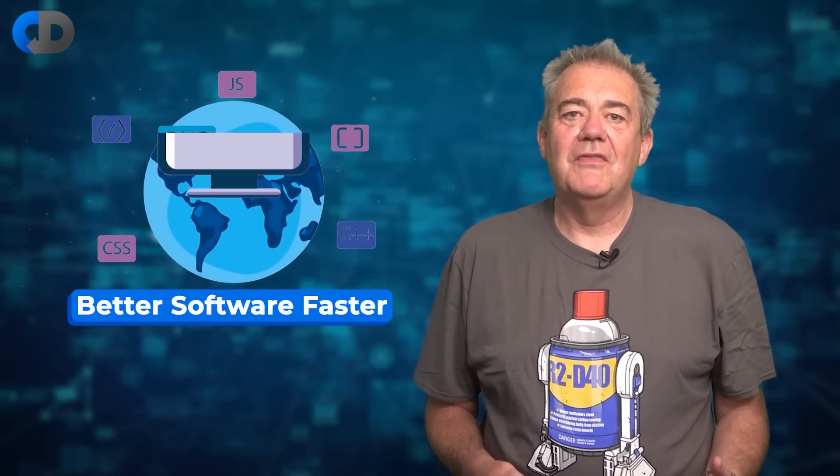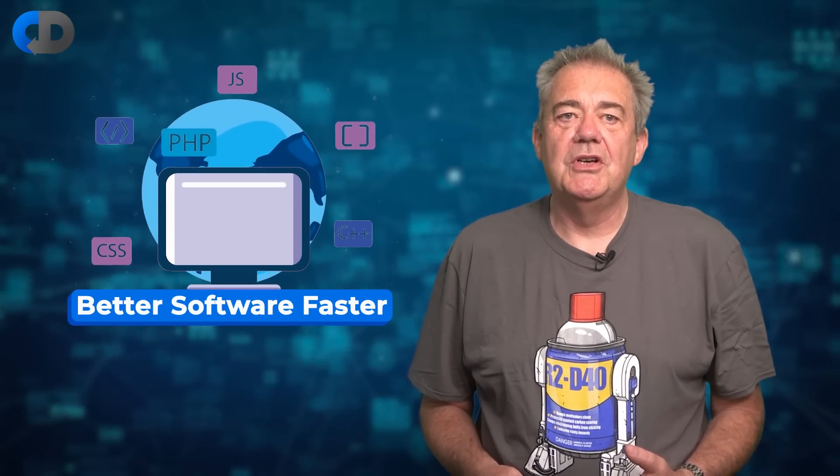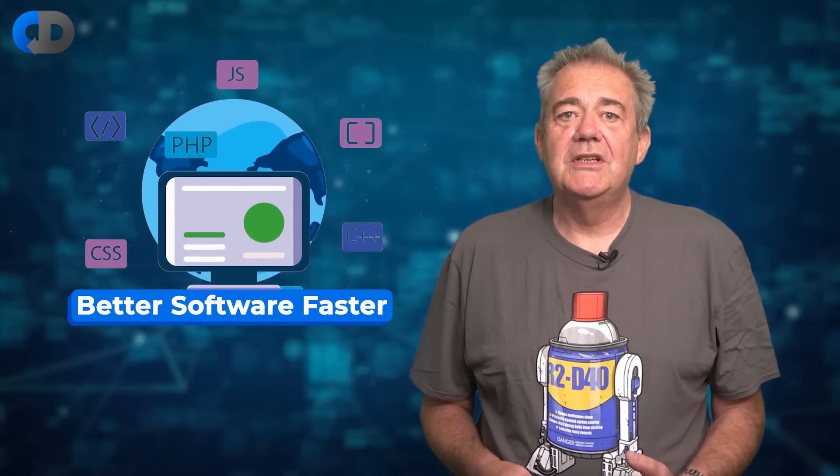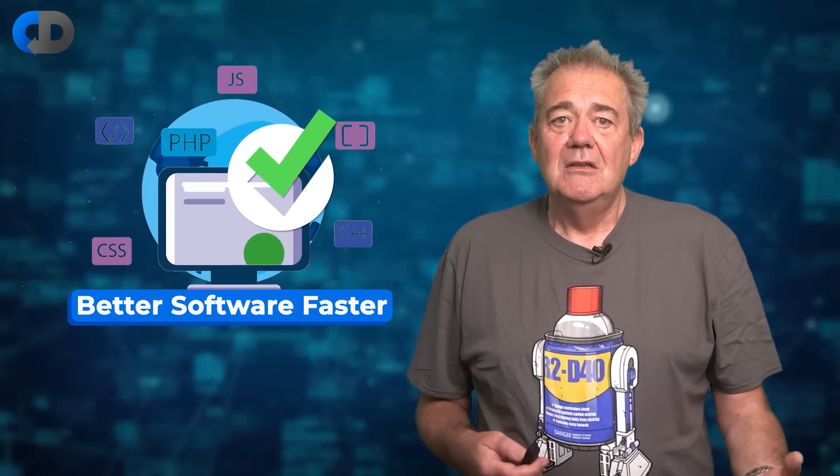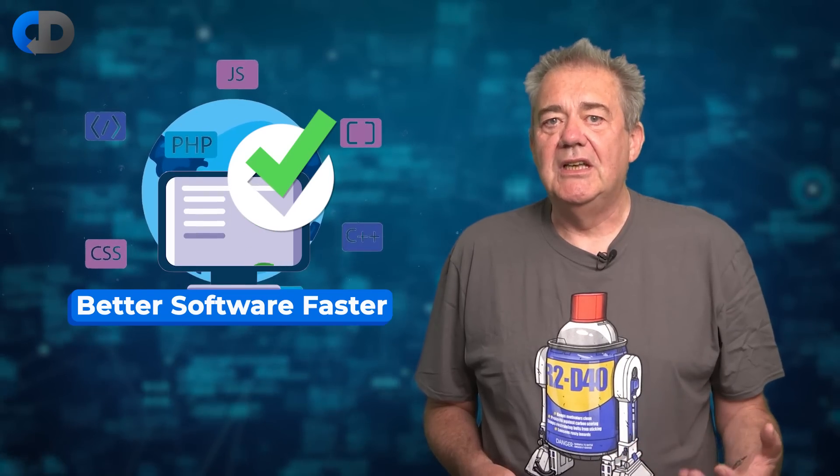If we want to deliver better software faster into production, that relies on us working in ways that allow us to know that our software is indeed better, but we also need to do that efficiently because we want to go faster. That's pretty obvious I suppose, but it has some important consequences. These consequences rule out some ways of working that don't give us fast, accurate, easy to achieve insight into the correctness of our work.